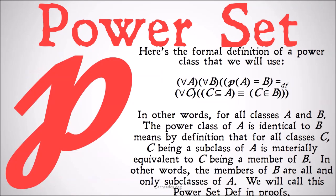Here's the formal definition of a power class that we will use. For all A and all B, the power class of A is equal to B means, by definition, for all C, C is a subclass of A is materially equivalent to C is a member of B. So all of the subclasses of A are members of the power class, and all of the members of the power class are subclasses of A. In other words, for all classes A and B, the power class of A is identical to B means, by definition, that for all classes C, C being a subclass of A is materially equivalent to C being a member of B. In other words, the members of B are all and only subclasses of A. We're going to call this power set definition in proofs.